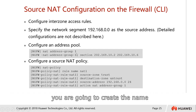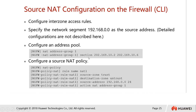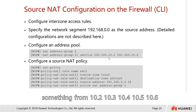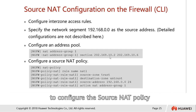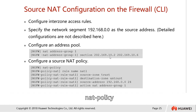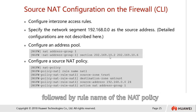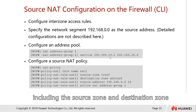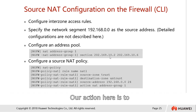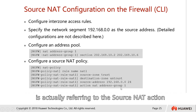In CLI, we first create the pool name — here it is NAT address group 1. Then the range of addresses: 202.169.10.2 until 202.169.10.6, giving us addresses 10.2, 10.3, 10.4, 10.5, and 10.6 as available addresses in the address pool. Next, we configure the source NAT policy under system view: NAT policy, followed by the rule name, then parameters including source zone, destination zone, addresses, and actions. The action here is to perform NAT using address pool mode — action NAT address group 1 refers to the source NAT action.